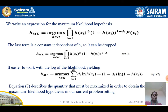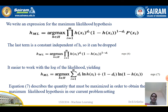Substituting the logarithm, the product rule becomes a summation: sum from i=1 to m of [di * ln(h(xi)) + (1 - di) * ln(1 - h(xi))]. This is equation 7. Equation 7 describes the quantity that must be maximized in order to obtain the maximum likelihood hypothesis in our current problem.